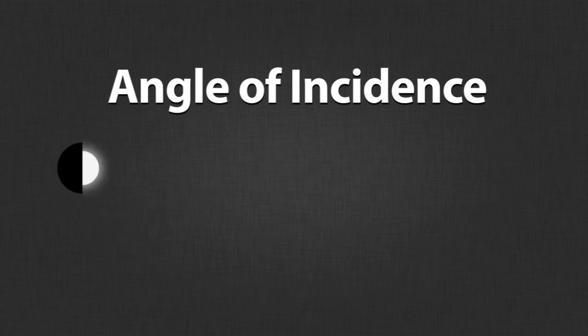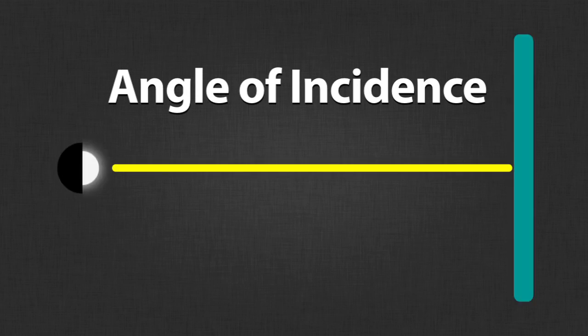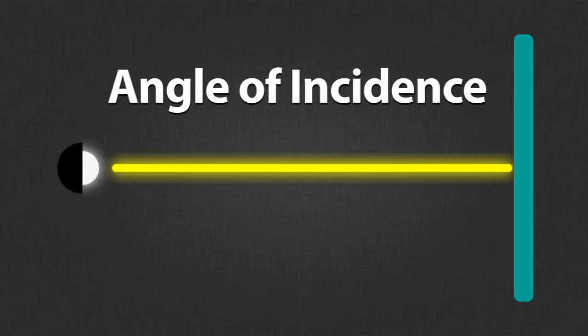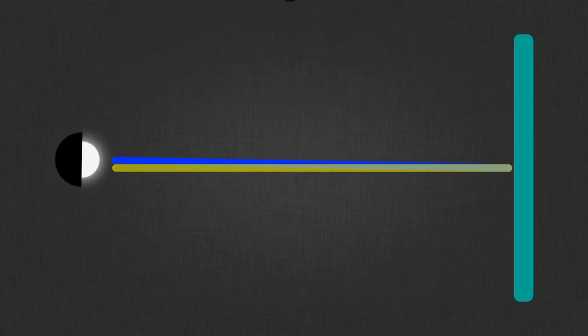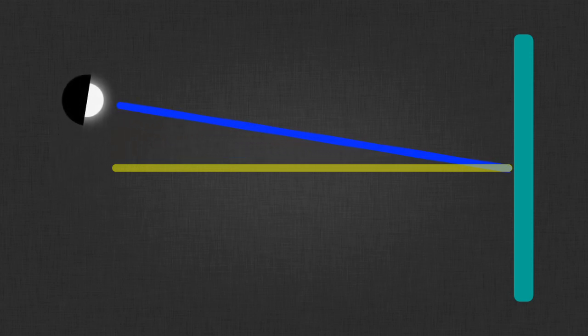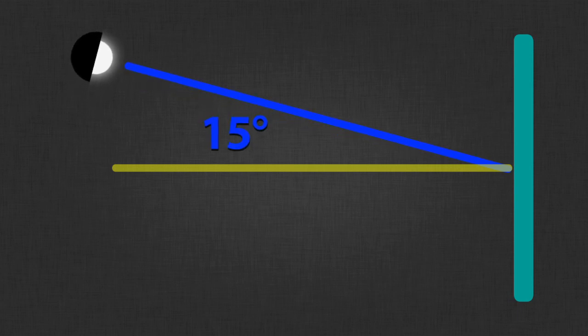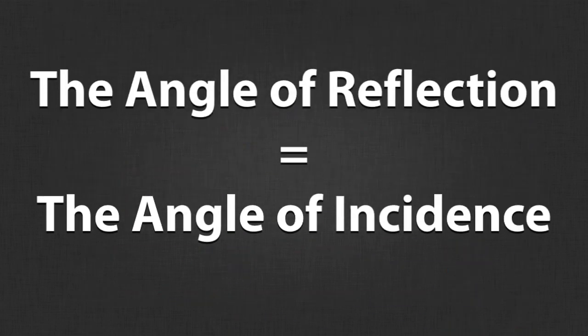The angle of incidence is the angle that light strikes a surface. If we have a light totally perpendicular to a flat surface, then the angle of incidence would be zero degrees. As our light moves, our angle of incidence also moves. In this animation, you can see that our angle of incidence is 15 degrees. What we need to know is how that light is reflected, so we can know where to place our camera. The angle of reflection is equal to the angle of incidence.